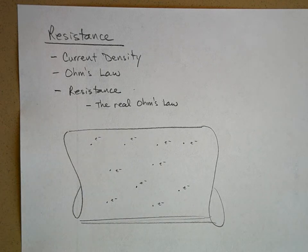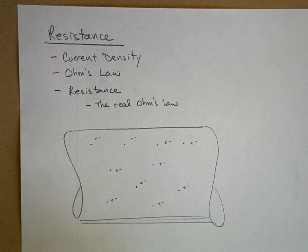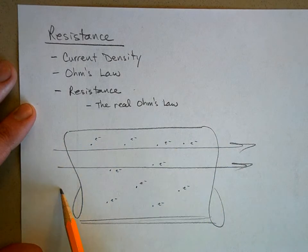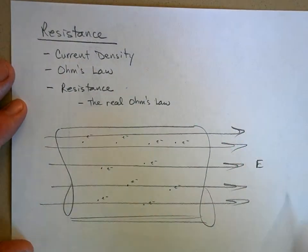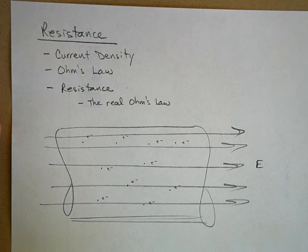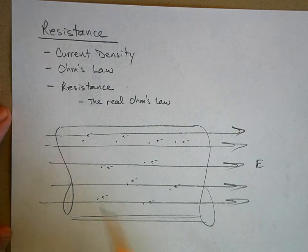What happens when you turn the lights on or flick the switch of a flashlight? It's that the battery, or whatever your voltage source is, establishes an electric field in the conducting material. Flick the lights on and there's our electric field E. What do electric fields do? They apply forces to objects that have charge. The protons, or the nuclei, are fixed, and most of the electrons are fixed, but the valence electrons are now free to move.